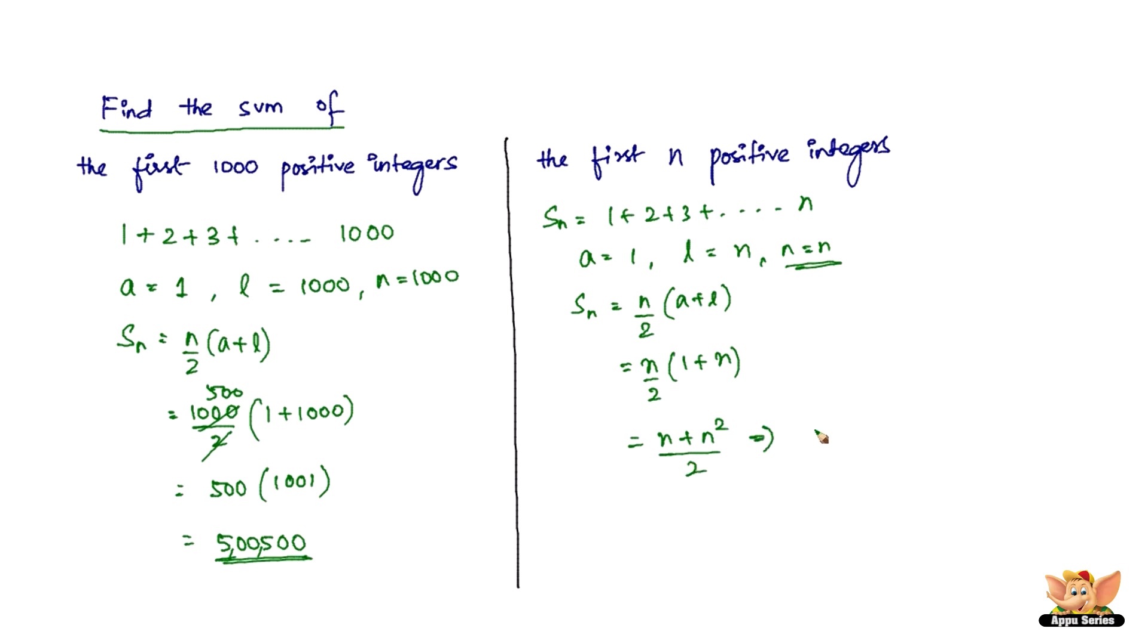Or we can just write it as n into n plus 1 divided by 2. So therefore, the sum of any number of positive integers is given by n into n plus 1 divided by 2. Say, for example, you want to find the sum of the first 35 positive integers, just substitute 35 in the place of n and then you'll get the sum. This ends this problem as well as this video. I'll see you with more concepts in the forthcoming videos.